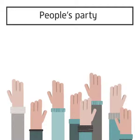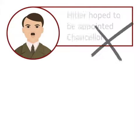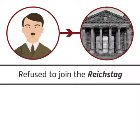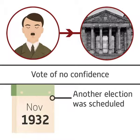The Nazi Party declared themselves as a People's Party, and Hitler hoped to be appointed Chancellor. President Hindenburg refused, only offering him the role of Vice-Chancellor. That wasn't enough for Hitler, and his party refused to join the Reichstag. A vote of no confidence against von Papen was passed, and another election was scheduled for November 1932.